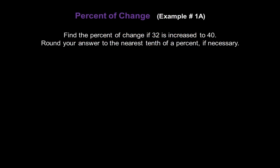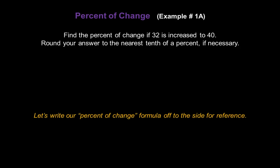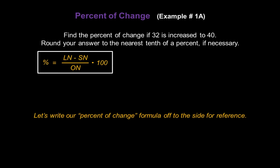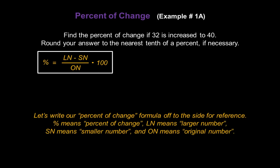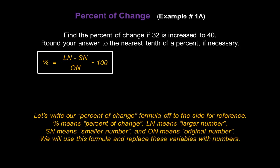Let's find the percent of change if 32 is increased to 40, and we'll round our answer to the nearest tenth of a percent if necessary. I'm going to start by writing our percent of change formula off to the side for reference. I'm using shorthand to save space: the percent symbol means percent of change, Ln means larger number, Sn means smaller number, and On means original number. We're going to use this formula and replace those variables with numbers from the problem, then solve for whatever is missing.